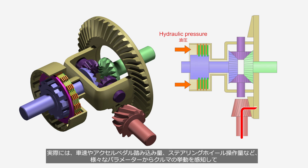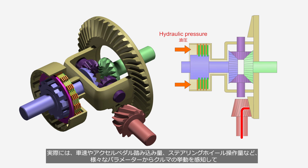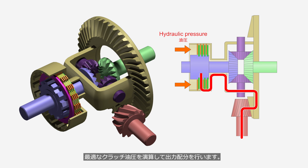In practice, the system detects vehicle behavior based on various parameters such as vehicle speed, accelerator pedal input, and steering wheel operation. It then calculates and generates clutch hydraulic pressure to ensure the optimal distribution of power.